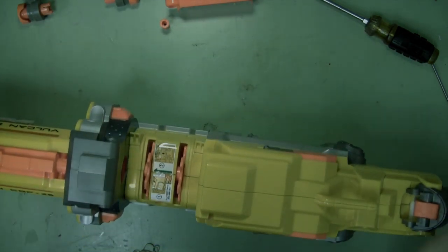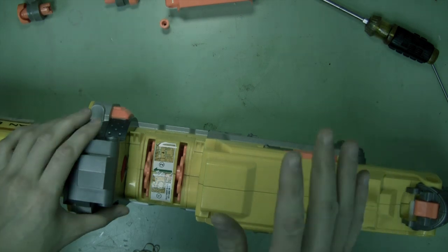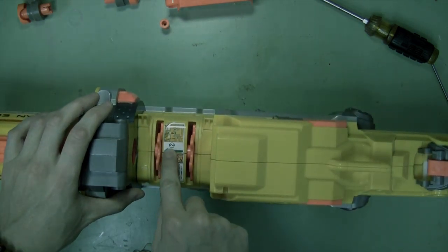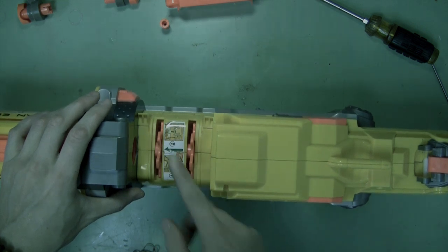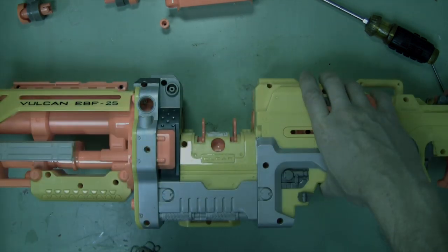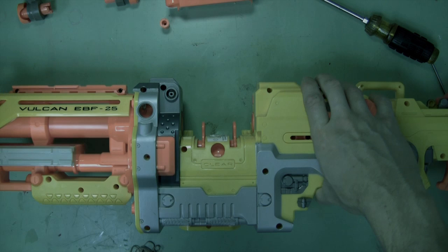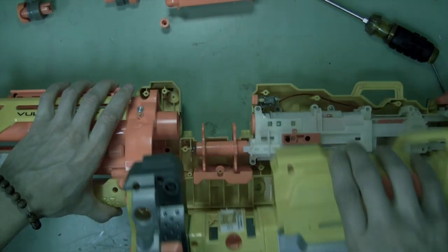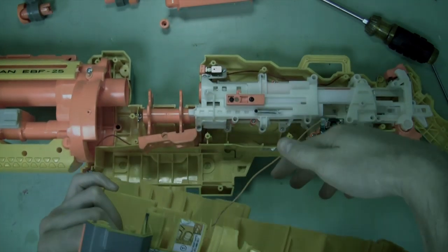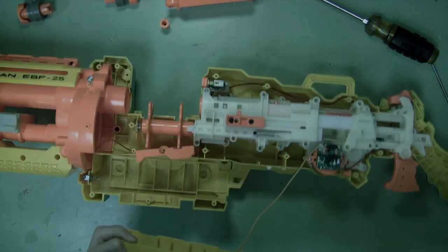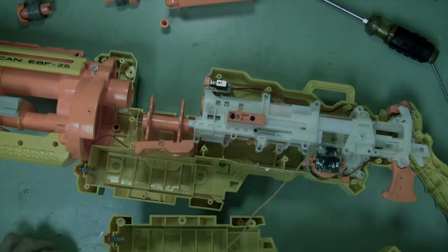Alright, now it's time to split the shell apart. And if you haven't done this to your Vulcan before, make sure you cut this sticker because it will prevent the shell from separating. And don't forget to keep track of your screws. And the two halves of the shell are connected by a wire. Make sure not to pull that wire out or you'll have to solder it back.